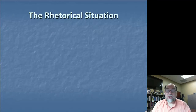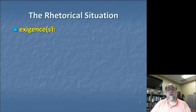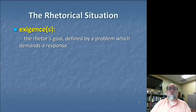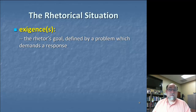Now that we have an understanding of the message we want to analyze, let's start thinking about the rhetorical situation faced by the Obama campaign to which this ad is a response. For Bitzer, there are three primary elements of the rhetorical situation. The first is the exigence — sometimes referred to as the exigency. When we're talking about rhetorical exigence, we're talking about the rhetor's goal, defined by a problem which demands a response. All rhetoric is intentional, so a primary thing you'll want to do when researching the rhetorical situation is to determine what goal the rhetor wants to achieve, what outcomes they're looking for, and what problems they're looking to solve.